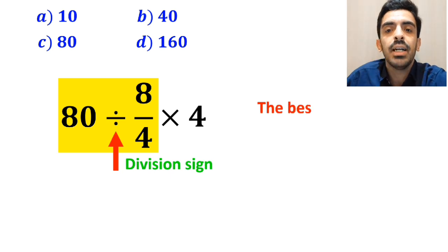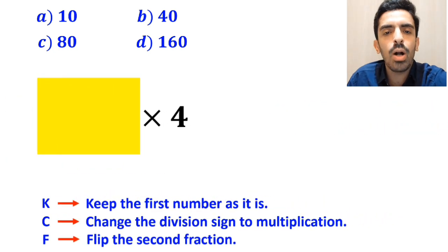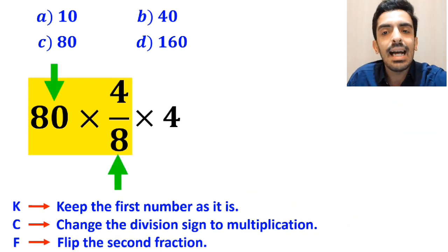Whenever we see a division sign between two terms, the best approach is to use the KCF rule. So we remove the highlighted part and replace it with 80 times 4 over 8.